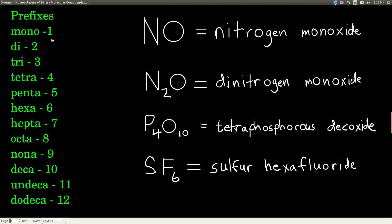And so if there's only one atom of the first element in the molecule, then we don't put a mono in front of the first element's name. But otherwise, we use mono for the second element and we use all the other prefixes for the first.